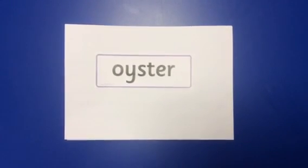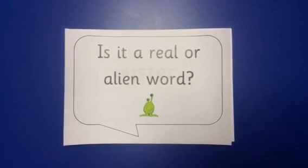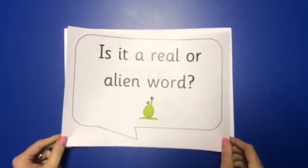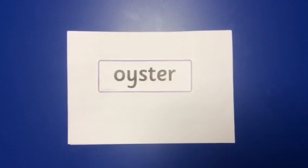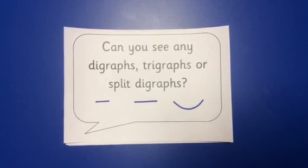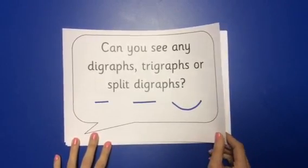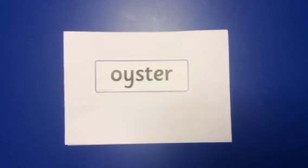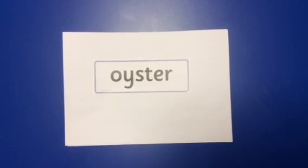Let's try another word. Just as I did before, I'm going to ask myself the first question: is it a real or alien word? There are no aliens next to this word, so I know it's a real word — it must make sense. Next, we ask the second question: can we see any digraphs, trigraphs or split digraphs? It's really important to look for digraphs, trigraphs and split digraphs first, as they can be really tricky to find. If we look for these first, we're less likely to miss them or make needless mistakes.